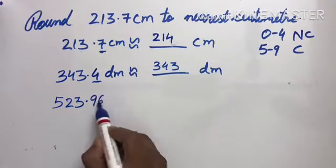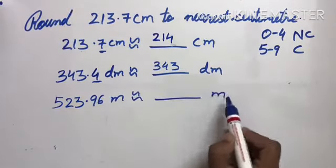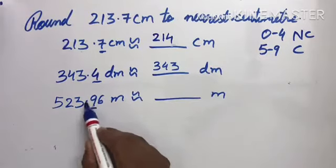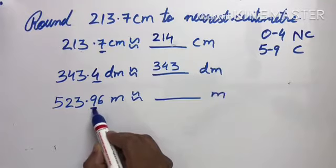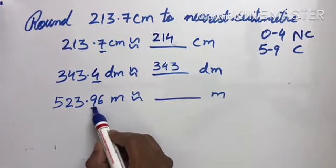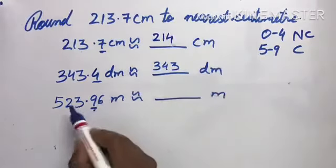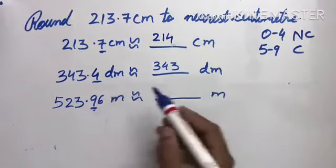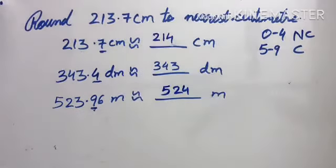Next, 523.96 meter to nearest meter. We check the first number after the decimal point, which is 9. 9 means change. Change means the 3 becomes 4. It means 524 meter. Understood?